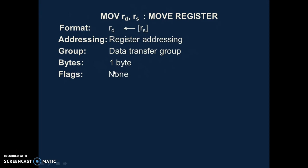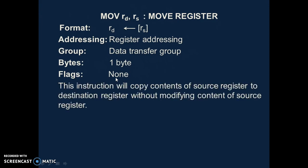Flags: none. None of the flags will get affected by this instruction, because only arithmetic and logical group instructions affect flags. This is an instruction from the data transfer group, so it will not affect any flag. This instruction copies the content of the source register to the destination register without modifying the content of the source register.